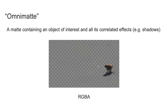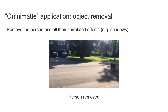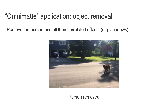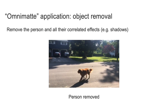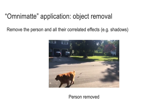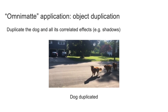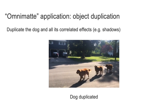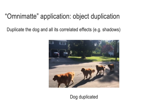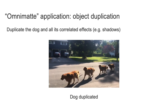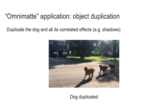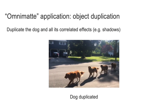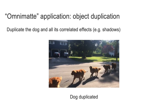Omnimats can be used for many applications such as object removal. Here we've removed both the person and their shadow, leaving only the dog. Duplication is another example of an editing effect — the omnimat enables us to easily duplicate the shadow along with the dog.